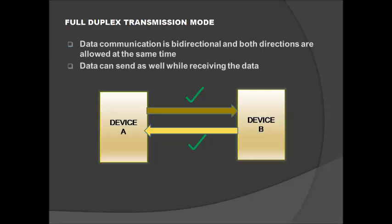So these are the transmission modes available in serial communication. Hope you understood the need of communication in embedded systems, the difference between parallel and serial communication, the need of synchronization in transmission of data, and finally about transmission modes and methods. Thank you for watching this video.